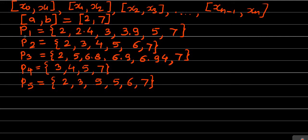If we consider the set P1, then all points 2, 2.4, 3, 3.9, 5, and 7 lie between 2 and 7. And 2 < 2.4 < 3 < 3.9 < 5 < 7. The first point x0 = 2 = a, and the last point xn = 7 = b. This means that P1 is a partition of the closed interval [2, 7].